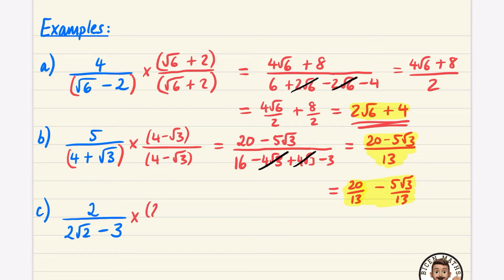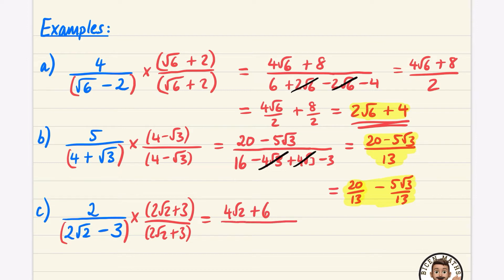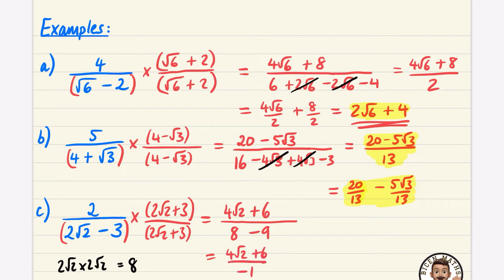For this one, I'm going to multiply by two root two plus three on the top and bottom. The numerator is two times two root two plus three, giving four root two plus six. For the denominator, I'll just do the first and last terms since the middle ones cancel. Two root two times two root two is two times two times two which is eight. Then minus three times three which is minus nine. So the denominator is eight minus nine which is minus one. That gives four root two plus six over minus one, so dividing by minus one gives minus four root two minus six.